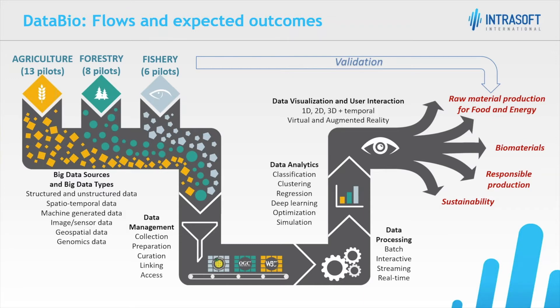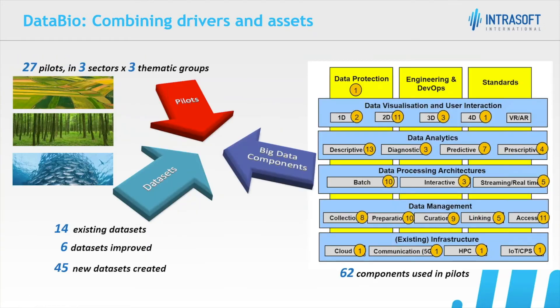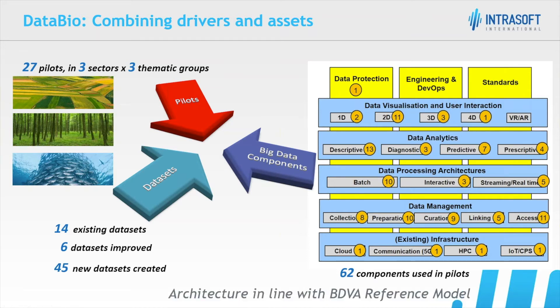There are three pillars of DataBio: the pilots, the datasets — because it is a big data project these are very important — and the big data components and solutions. As you can see on the radar chart side, these are arranged according to the BDVA, the Big Data Value Association Reference Model. Since the main authors of this reference model were part of DataBio, we had a two-way interaction with this model. You can see the infrastructure, management, data processing, data analysis, and visualization. The focus here is on big data more than IoT or other domains.